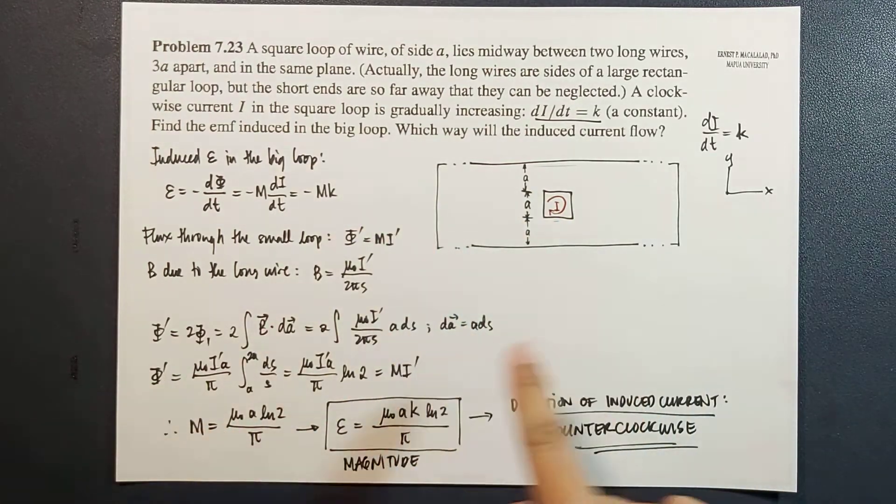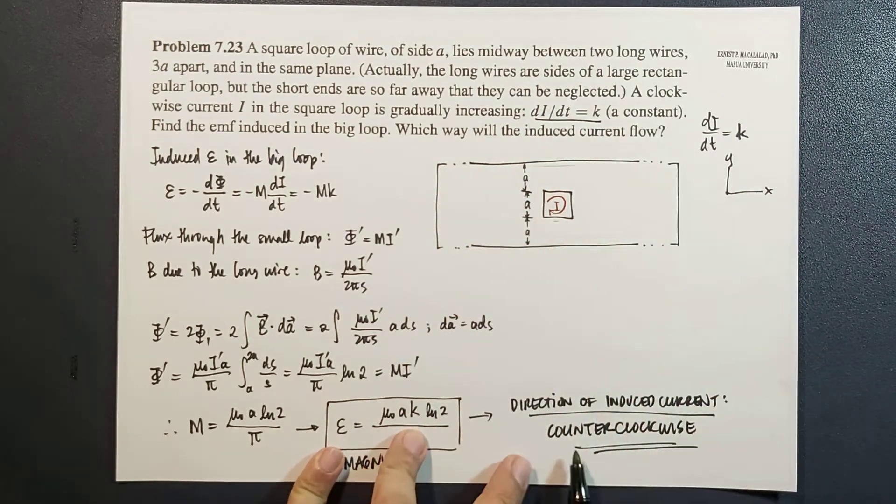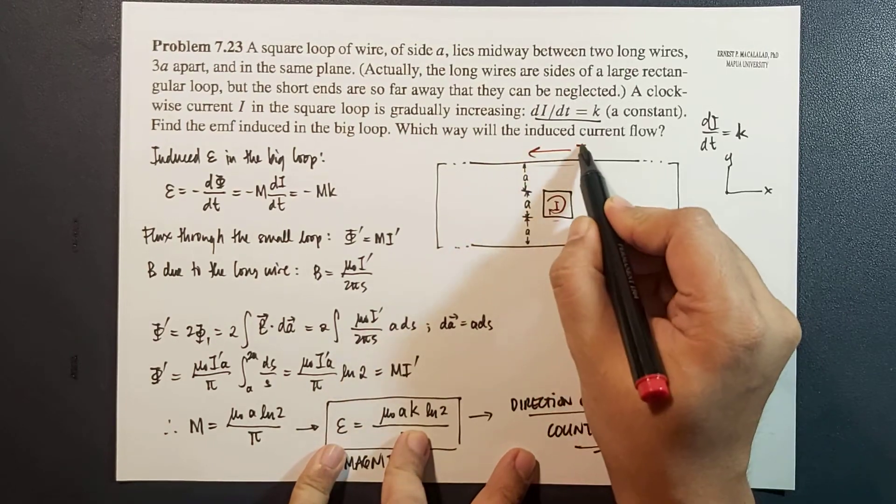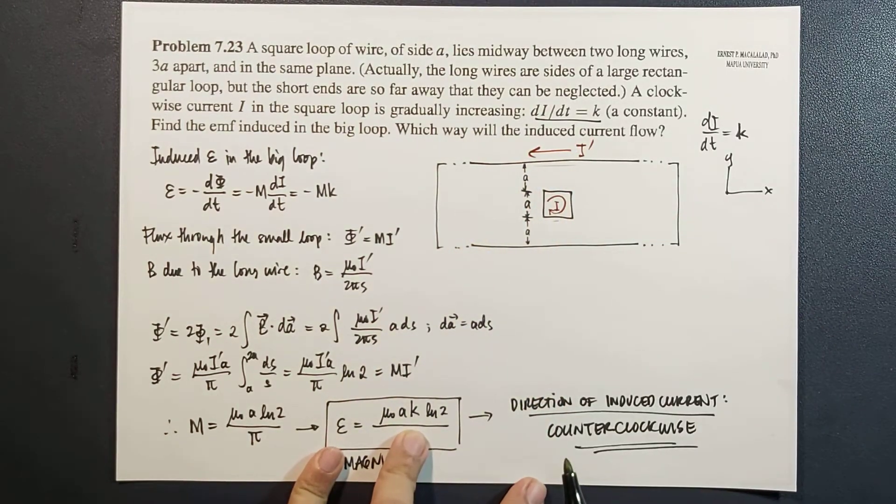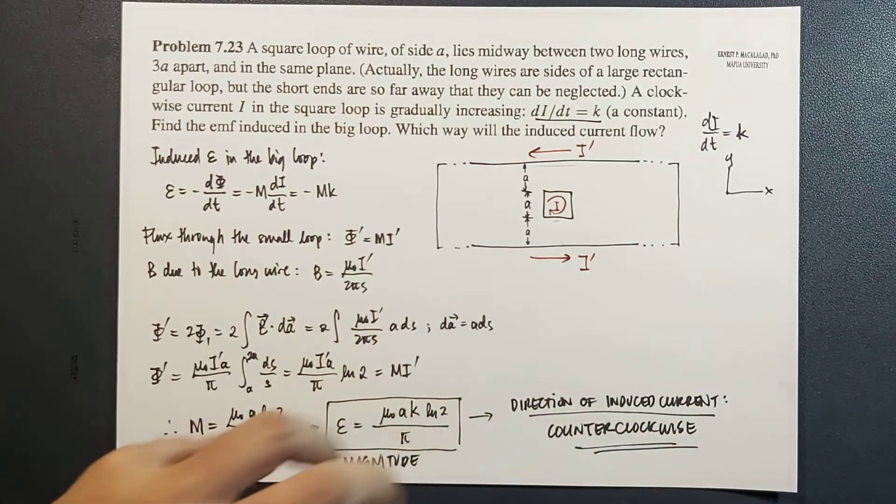If we're going to relate this here, so this wire will now have a current in this direction, let's call it current I prime. And in this wire, the current will be in this direction.